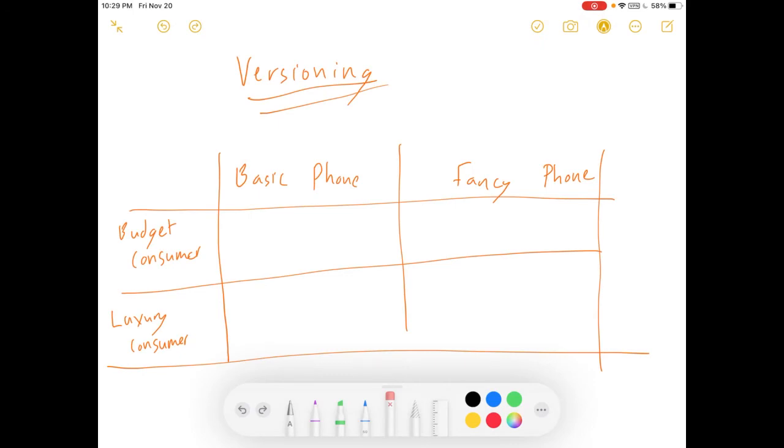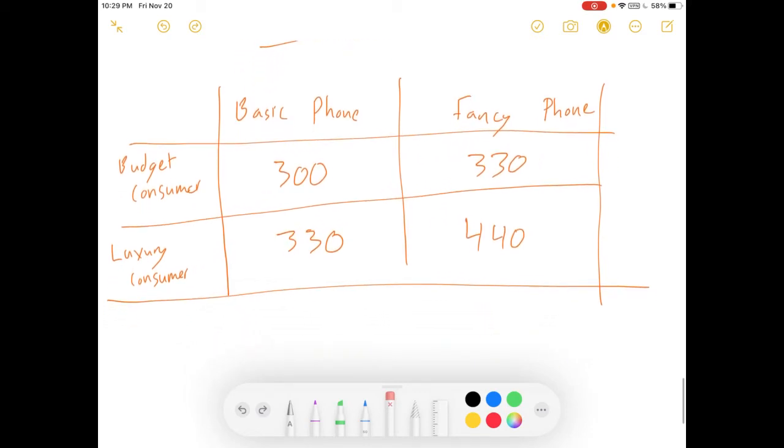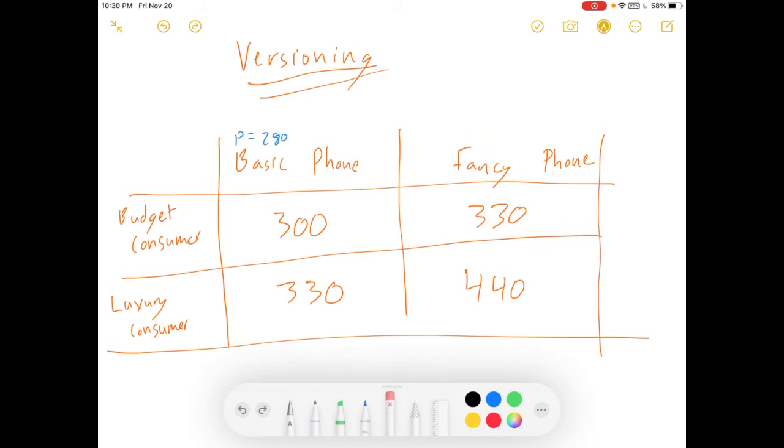One way to do indirect price discrimination is to create different versions of your good. So, we have a firm here that is targeting two kinds of consumers, a budget consumer and a luxury consumer, with a basic phone and a fancy phone. And our budget consumer is willing to pay $300 for a basic phone and $330 for a fancy phone. Our luxury consumer is willing to pay $330 for the basic or $440 for the fancy. Say the firm chooses a pricing scheme where the basic phone sells for $280 and the fancy phone sells for $380. Is this pricing scheme incentive compatible?